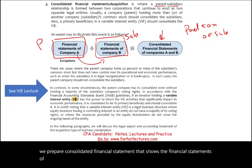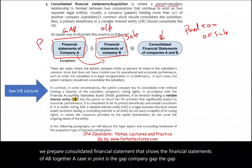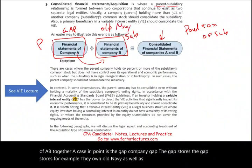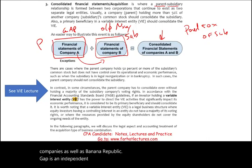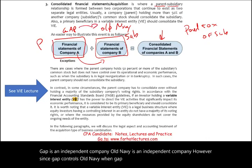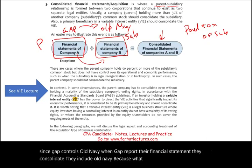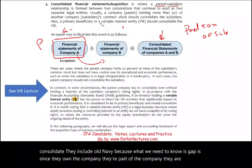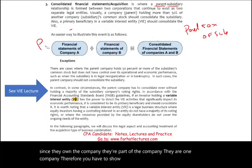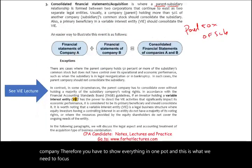A case in point is the Gap company. Gap owns Old Navy as well as Banana Republic. Gap is an independent company and Old Navy is an independent company. However, since Gap controls Old Navy, when Gap reports its financial statements, they consolidate and include Old Navy. Because they own the company, they are one company, and therefore you must show everything in one place. This is the consolidated financial statement.